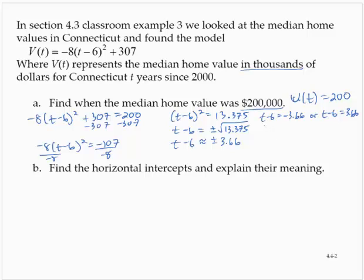Adding 6 to both sides, t is equal to, let's see, -3.66 plus 6 is 2.34. Adding 6 to the other equation gives us 9.66.